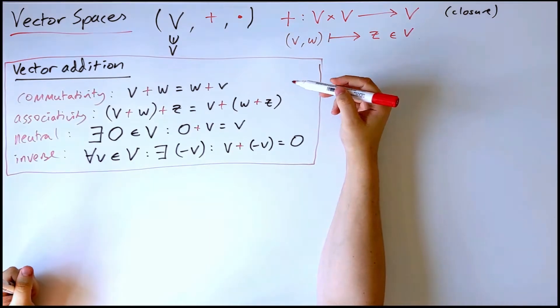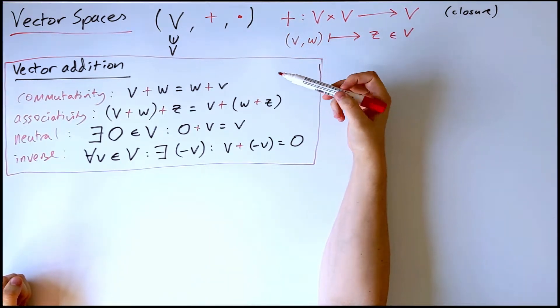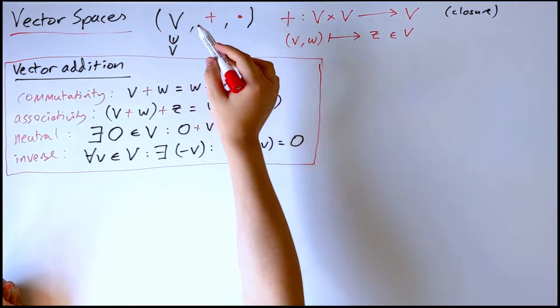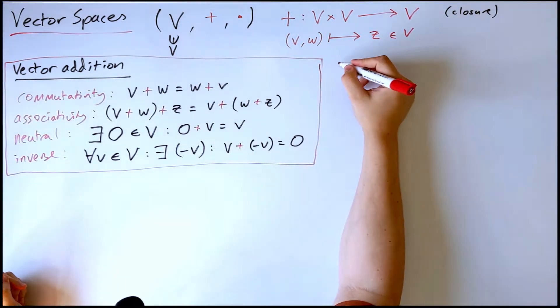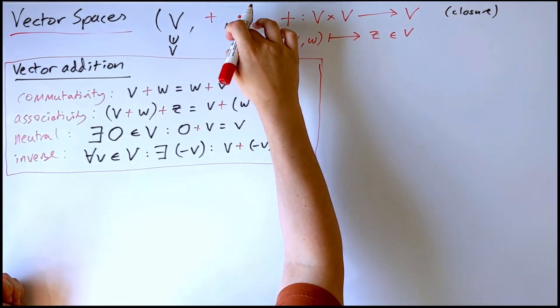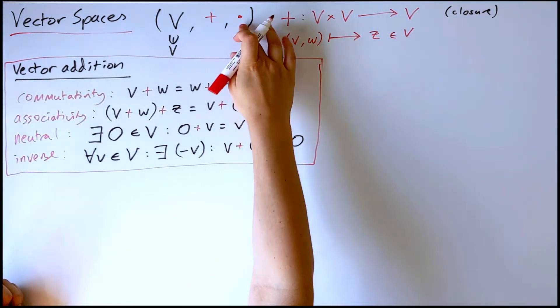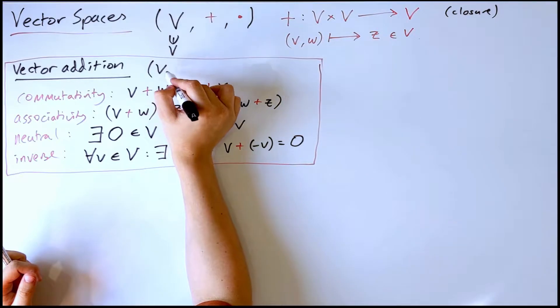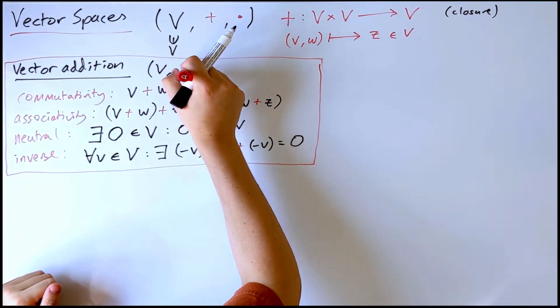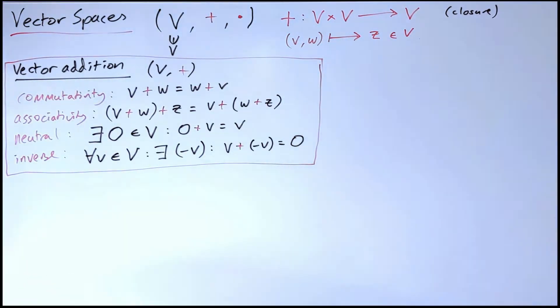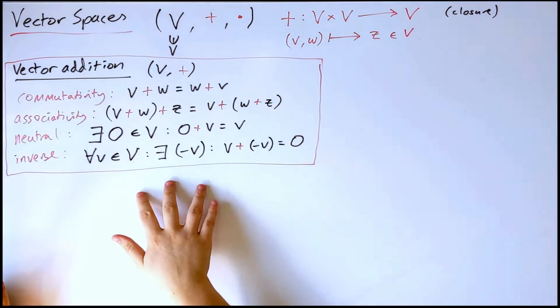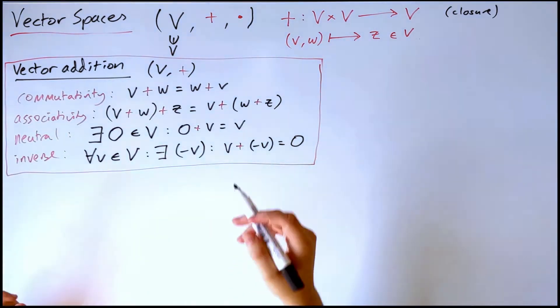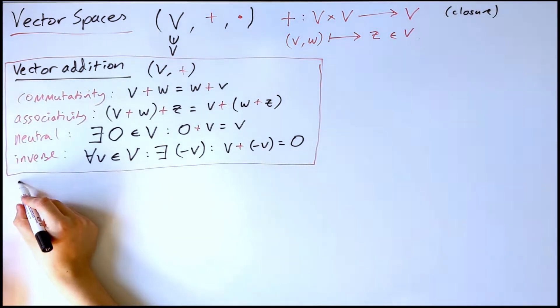If we remember from the group case, when our composition operation was commutative, we said we had an abelian group. So it turns out that a vector space is simply an abelian group with an additional operation called scalar multiplication, which I'll talk about in a second. But the vector space, just considering vector addition, forms an abelian group. Okay, so this is half of what makes a set into a vector space, the fact that we can define a vector addition operation. We also need scalar multiplication.